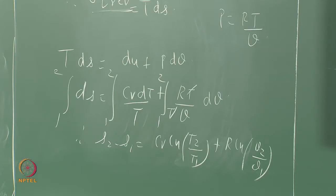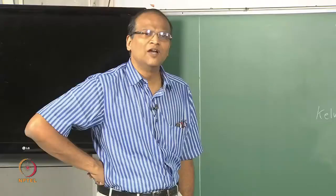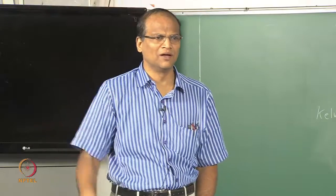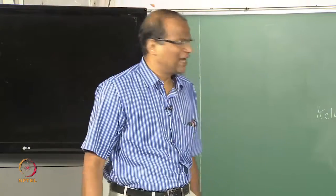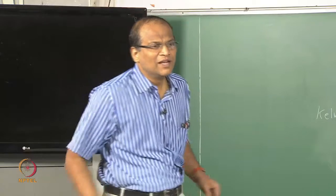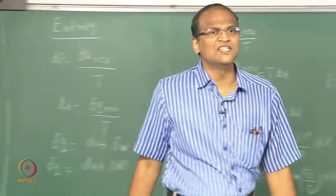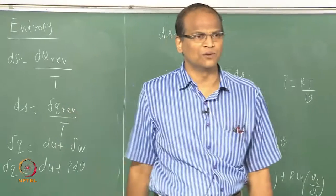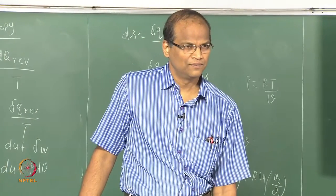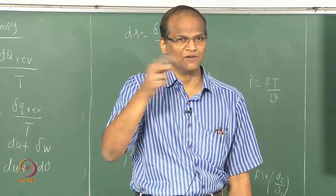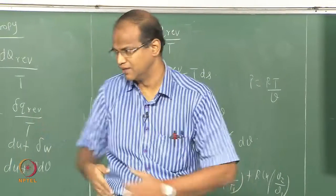You have studied all this. S2 minus S1 equals C_v times... if you give me the two temperatures and either the pressure or volume, I can use PV = RT and calculate the entropy change. It can be calculated only for a reversible process, but since it is a property, for an irreversible process the entropy change between S1 and S2 will generally be more than what is taken through a reversible process.